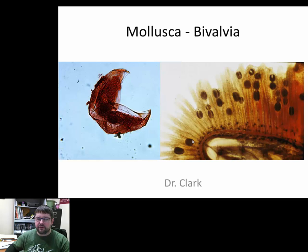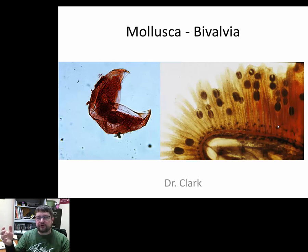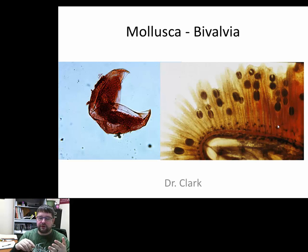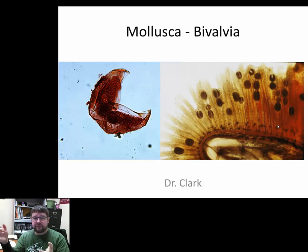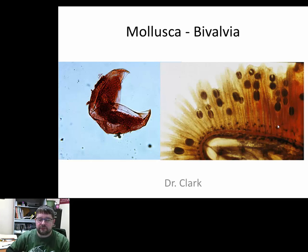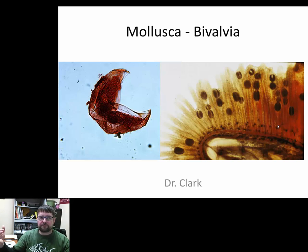We'll talk about this life history because it's kind of interesting, and it shows that when we talk about parasitism, it pops up multiple times — it's a very good case of convergent evolution. It's not just seen in Platyhelminthes — trematodes, cestodes, monogenean parasites, flukes — we see it again in some bivalves, we see it in some insects, and we'll see it again as we progress through the different classes and phyla of Animalia.